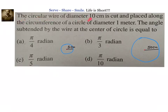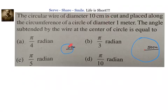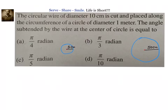A circular wire of diameter 10 centimeters is cut and placed along the circumference of a circle of diameter 1 meter. The circular wire has a radius of 5 centimeters. The bigger circle has a diameter of 1 meter, so its radius is 50 centimeters. We need to find out the angle subtended by the wire at the center of the circle.